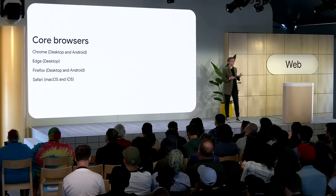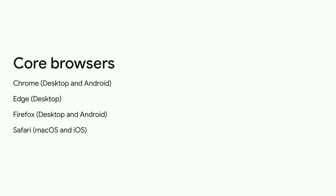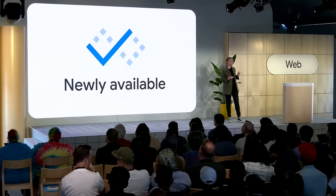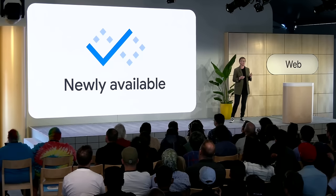A key thing we had to do this year was figure out how to define Baseline. The features in this talk are all what we call Baseline newly available, meaning they're interoperable across our core browser set, which includes Chrome Desktop and Android, Edge Desktop, Firefox Desktop and Android, and Safari macOS and iOS. If something is Baseline newly available, it's indicated by a blue logo, and you'll find this on Can I Use and MDN already, so you know at a glance that a feature is part of this group.